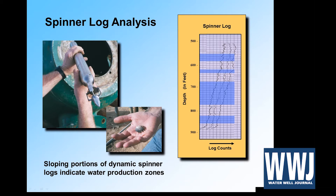As the tool goes deeper into a non-producing zone, there's less and less flow — and where it's straight up and down, it's like a blank pipe with no new or less water as the tool goes down. In this case, between about 760 and 820 feet, there's no new water production — it's kind of a dead zone, probably a clay zone. So we can know where our pay zones are.